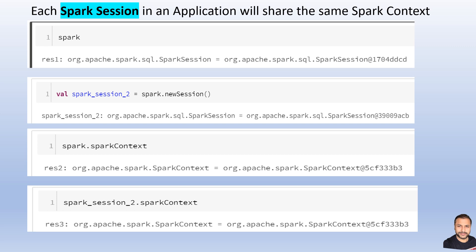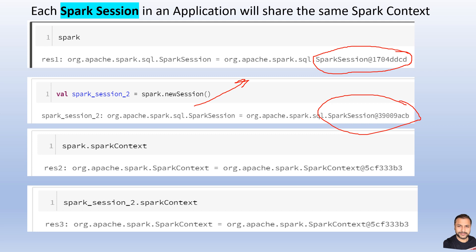From the code perspective, in the notebook, running `spark` — the implicit Spark session — returns a Spark object with a hash code. If you create a new session using the new session API, you get a different object reference, showing they are unique and different. However, when you check which Spark context object each session references, both point to the same Spark context — same hash code. So for a single application run, we have a single Spark context but multiple Spark sessions with isolated and independent configurations.